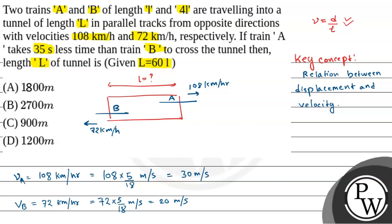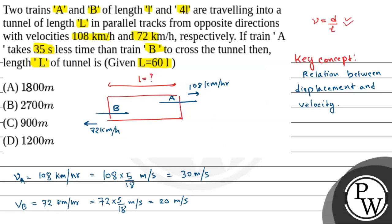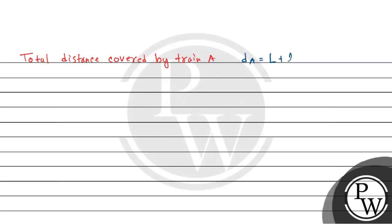For train A to cross the tunnel, the total distance covered — let's call it D_A — equals the length of the tunnel plus the length of the train. The length of train A is L, and the tunnel length given in the question is 60L. So D_A equals 60L plus L, which equals 61L.